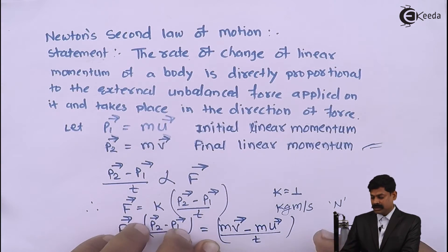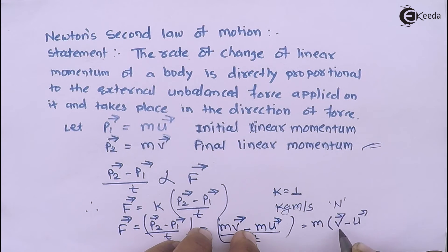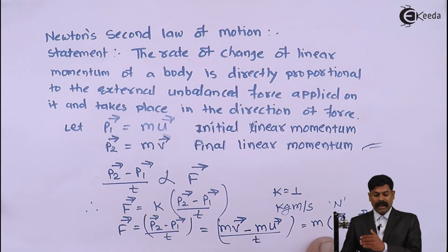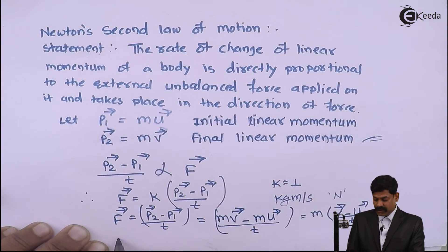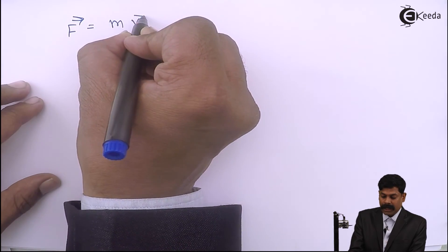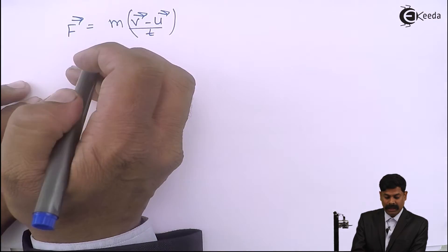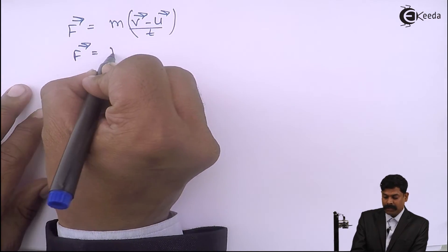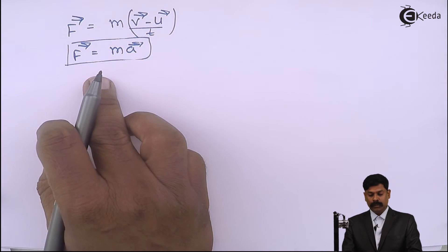The term (V̄ − Ū) / T is the acceleration of the body. Therefore F̄ = M · (V̄ − Ū) / T, giving us F̄ = M·Ā. This is Newton's second law of motion.